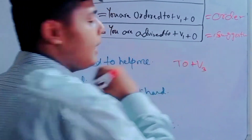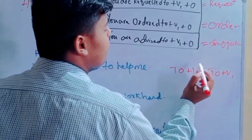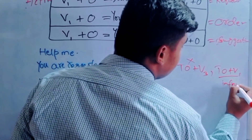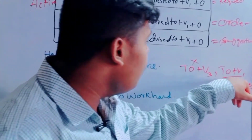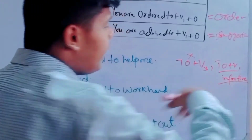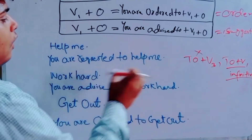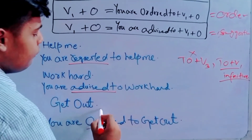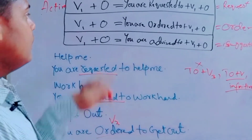We are not using the third form of the verb here; we are using the first form because after 'to', we use the infinitive — which is 'to' plus the verb's first form. According to grammar rules, the infinitive takes the first form of the verb. So this is why we put the verb first form after 'to'. The third form is used in 'requested', 'advised', and 'ordered', and after 'to' we put the verb first form. This was the lesson on imperative sentences — I hope you can understand.